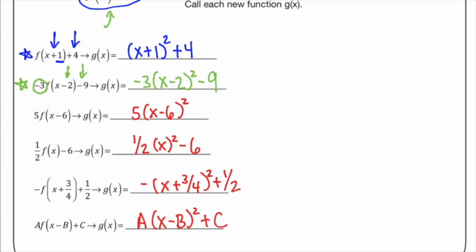Go ahead and pause the video and give those a try, then I'll post the answers. Here are the solutions — check to see if you got them right. Make sure you have the parentheses in the right places and watch your plus and minus signs. Notice that when we put a, b, and c in there, this looks an awful lot like vertex form. That's where vertex form comes from — the multipliers when a, b, and c can be any number.